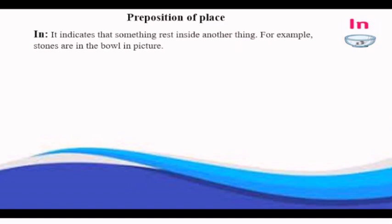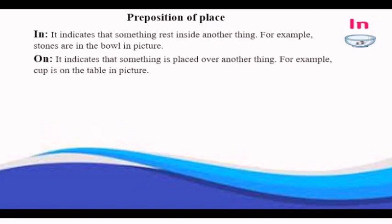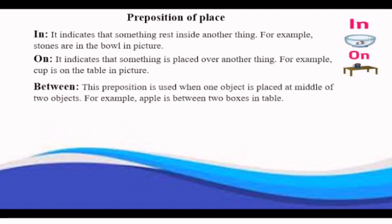On indicates that something is placed over another thing. For example, cup is on the table, in picture. Between is used when one object is placed at middle of two objects. For example, apple is between two boxes, in picture.